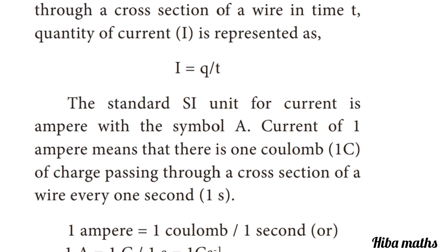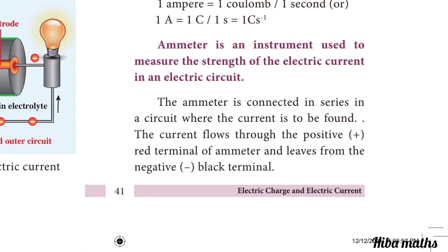A current of 1 Ampere means that there is 1 Coulomb of charge passing through a cross section of wire every 1 second. So, 1 Ampere is equal to 1 Coulomb divided by 1 second — that is, 1A = 1C/s = 1 Coulomb per second.